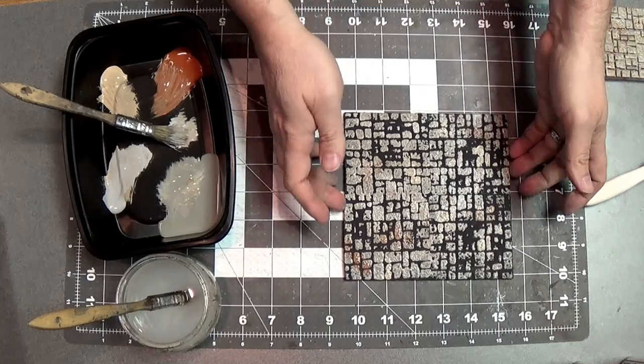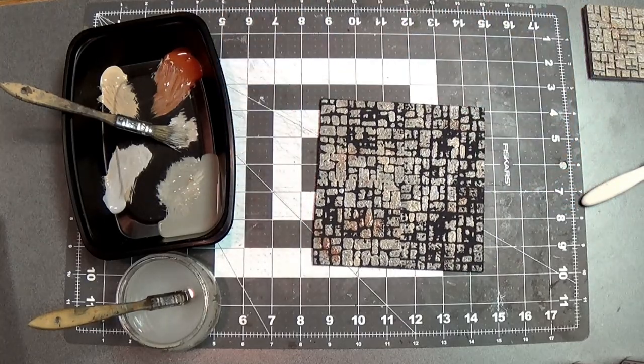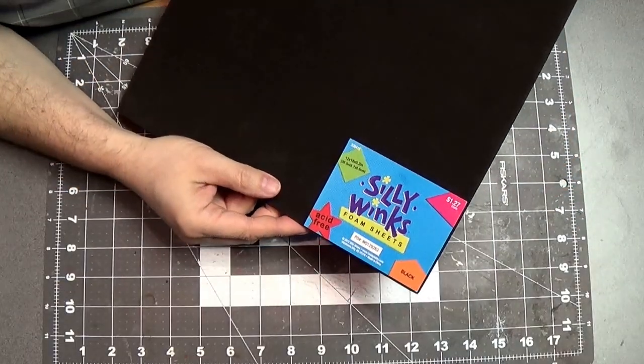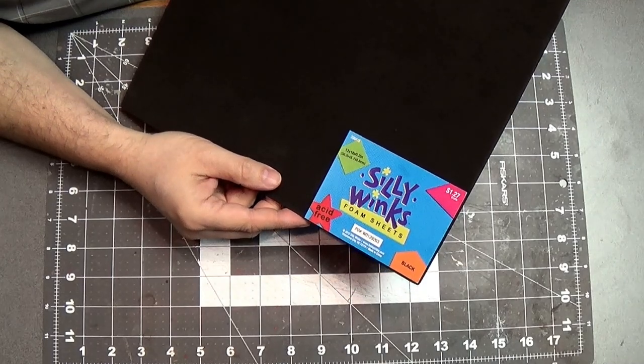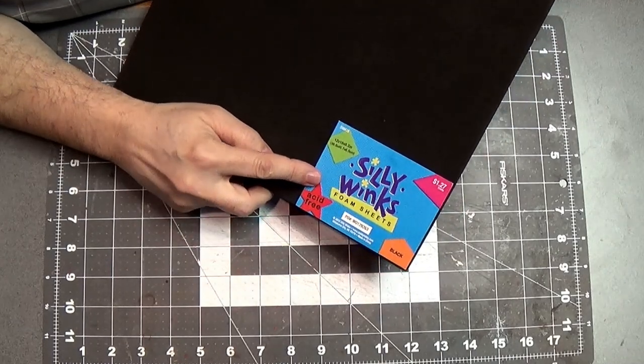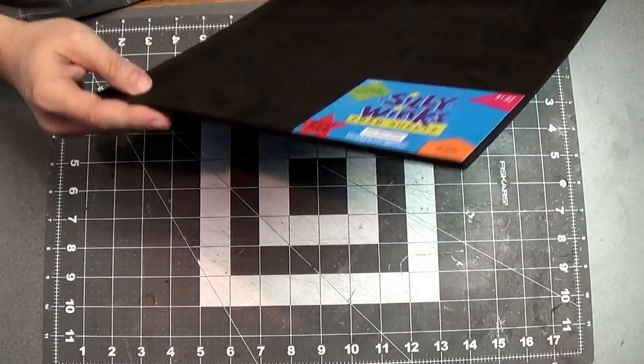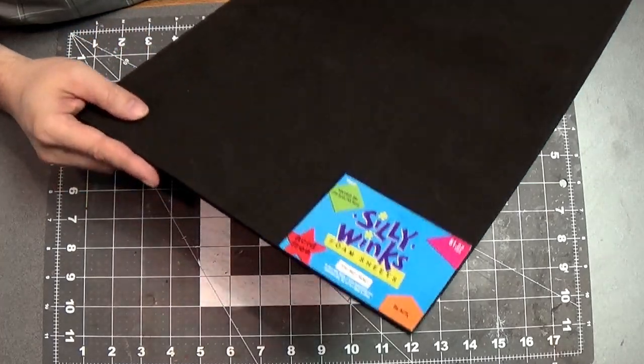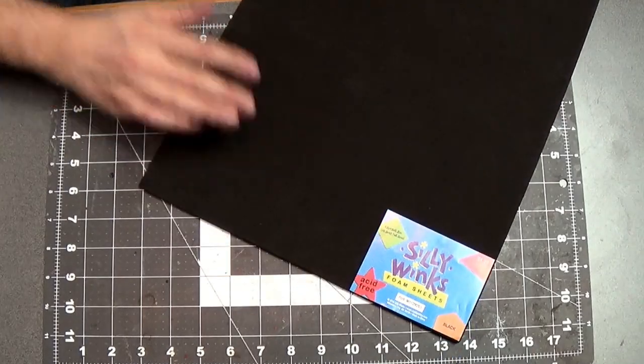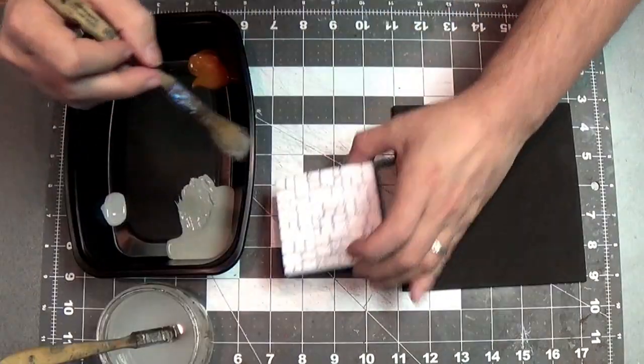There we go and I find the tile eats a little bit of paint too. It sucks up a little bit of the paint. You can also use this Silly Winks craft foam and it's actually cheaper than the cork. I get the five millimeter wide so it's the same width as the cork tiles and it's fairly sturdy. It takes paint great. It's wonderful.